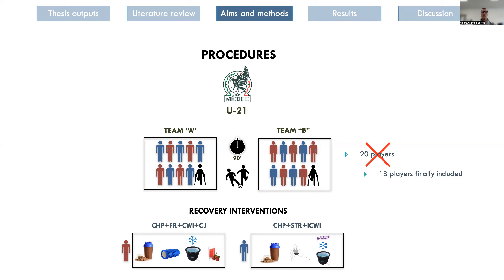We exposed the players to a competitive game between them. We ultimately analyzed 18 players because two — one from each team — were injured. We proposed two different recovery interventions. One group received a carbohydrate and protein shake, foam roller, cold water immersion, and cherry juice. The other group received a carbohydrate and protein shake, a stretching protocol, and intermittent cold water immersion. Both groups used different recovery strategies because it was not ethical to have a control group without any intervention in elite players.